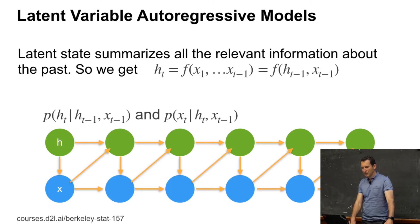So let's just recap. Basically, what we assume is that we have some function F which compresses all the information from X1 up to XT minus 1 into some state HT.